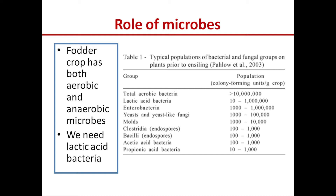Now, what is the role of microbes? In one study it has been shown that green fodder before ensiling contains various types of microorganisms — yeasts, molds, clostridia, bacilli, acetic acid bacteria, propionic acid bacteria — of different population sizes per gram of crop. The population of aerobic bacteria is the highest, but that of lactic acid bacteria is relatively less.